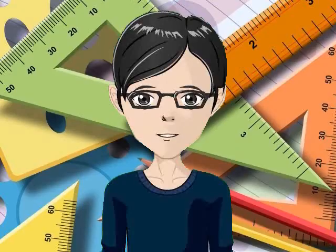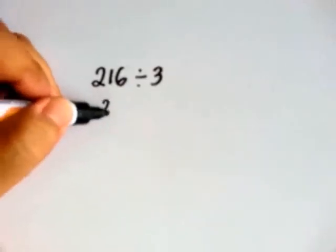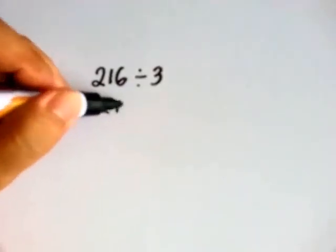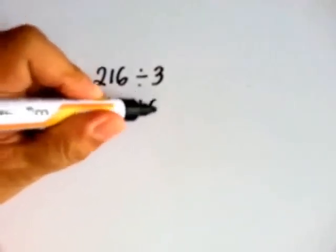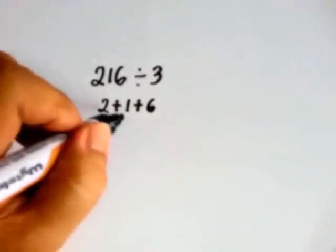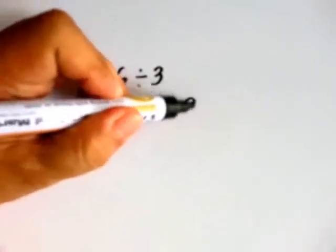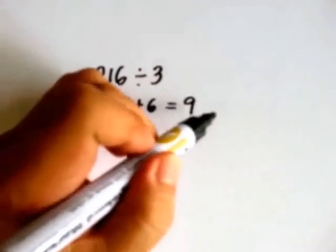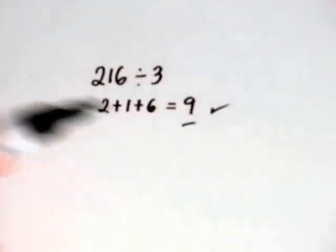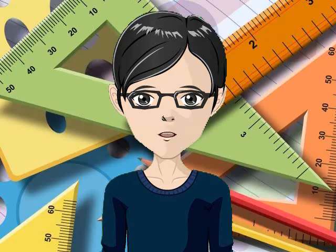Another example: is 216 divisible by 3? Again, we add the digits. 2 plus 1 plus 6 equals 9. 9 is in the multiplication table of 3. So 216 is divisible by 3. Madali lang, di ba?